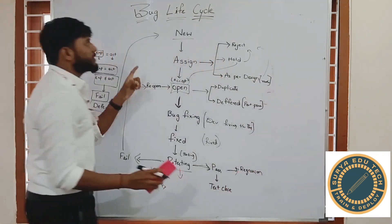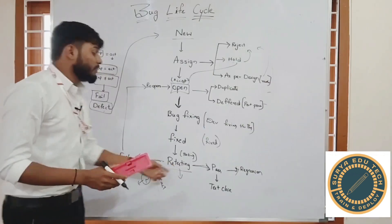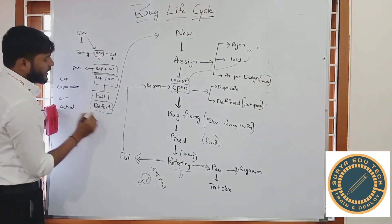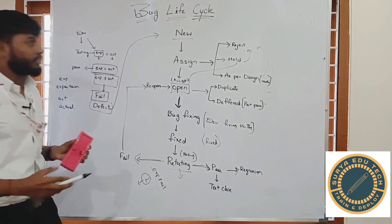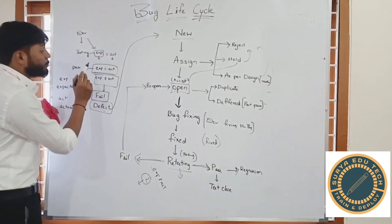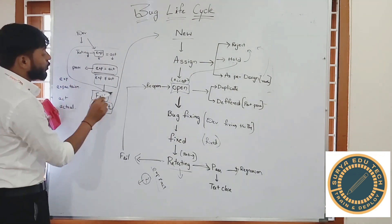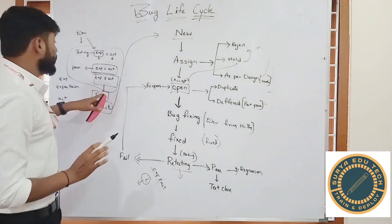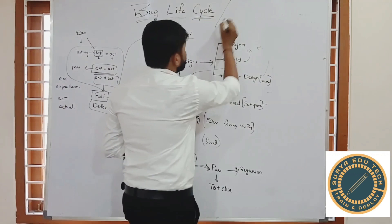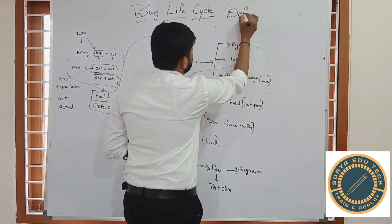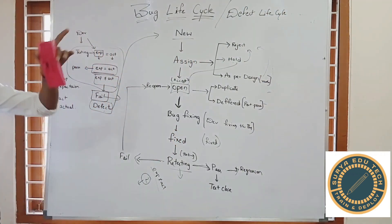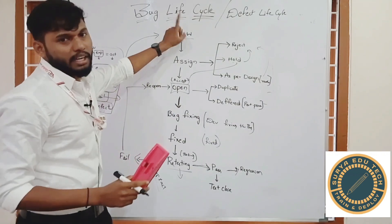This is about the defect life cycle, also known as the bug life cycle. The bug life cycle starts when the testing team finds any defect in a failed result, and we follow this cycle from there. It is also known as the defect life cycle. In interviews, they may ask about either the bug life cycle or the defect life cycle.